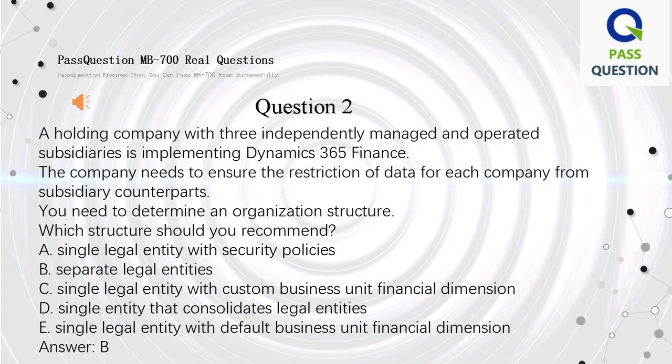Question 2: A holding company with three independently managed and operated subsidiaries is implementing Dynamics 365 Finance. The company needs to ensure the restriction of data for each company from subsidiary counterparts. You need to determine an organization structure. Which structure should you recommend?